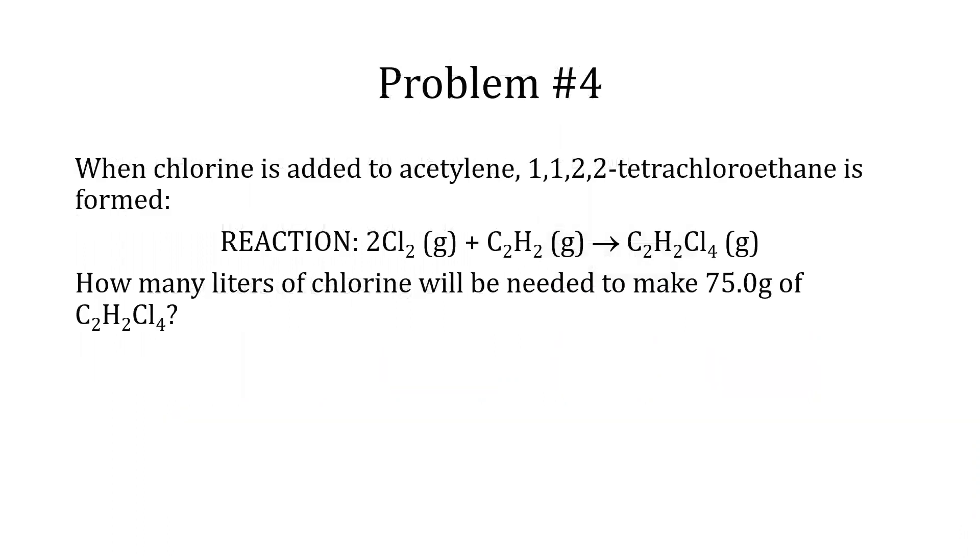Problem four is: when chlorine is added to acetylene, 1,1,2,2-tetrachloroethane is formed. The reaction is 2Cl2 plus C2H2 forms C2H2Cl4. How many liters of chlorine will be needed to make 75 g of C2H2Cl4?